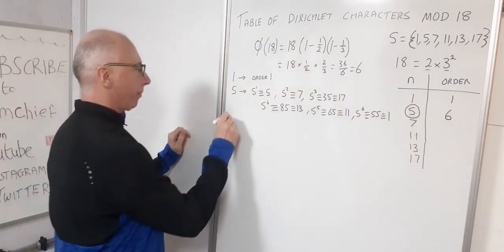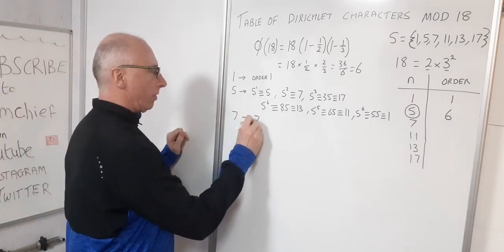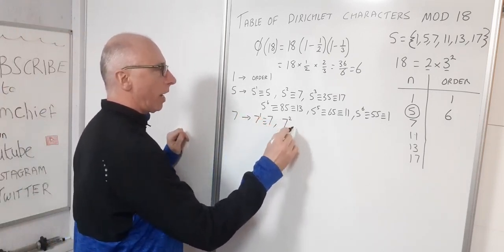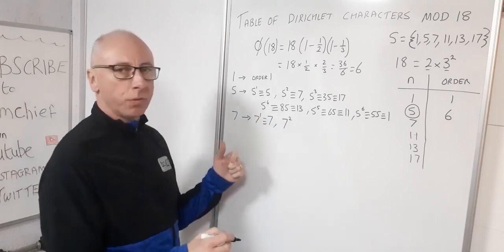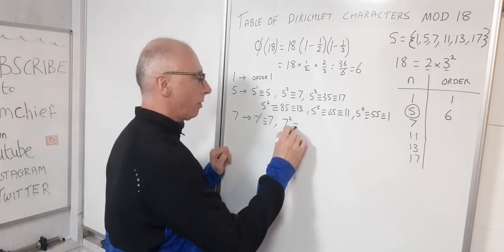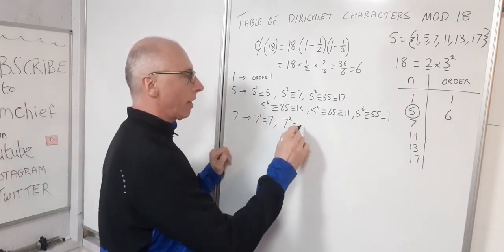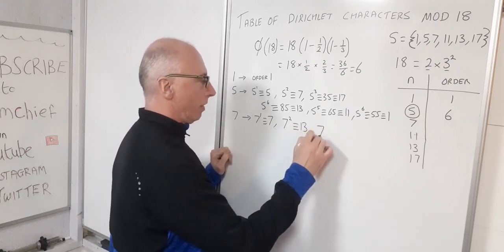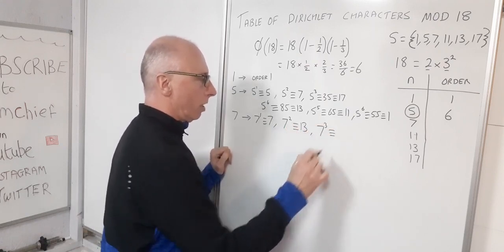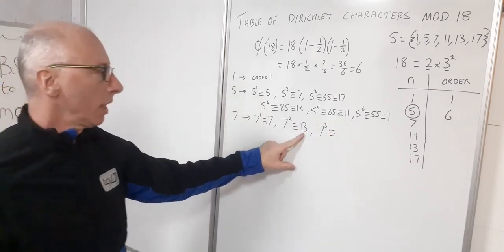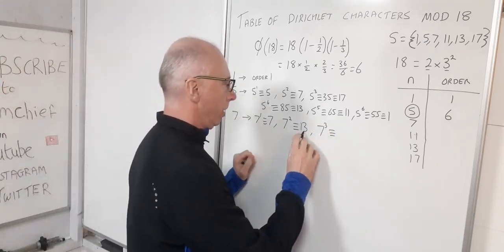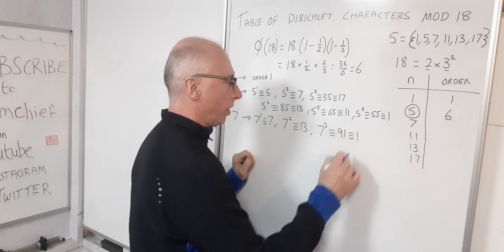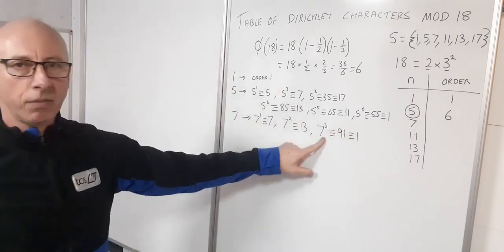Let's try 7: 7^1 ≡ 7, 7^2 = 49 ≡ 13 (mod 18), 7^3: 7×13 = 91 ≡ 1 (mod 18). So 7 is of order 3.